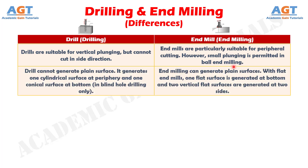Number six: drill cannot generate plain surface. It generates one cylindrical surface at the periphery and one conical surface at the bottom, in blind hole drilling only, whereas end milling can generate plain surfaces. With flat end mills, one flat surface is generated at the bottom and two vertical flat surfaces are generated at two sides.